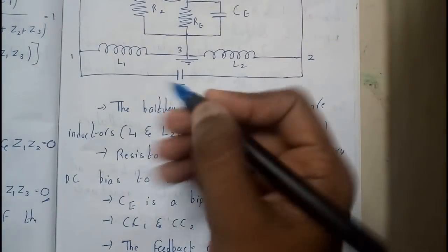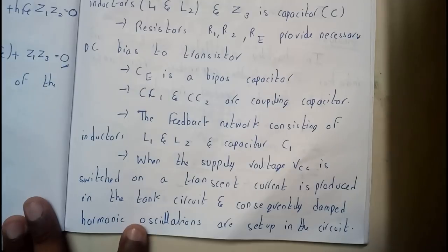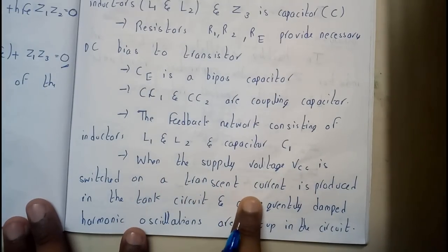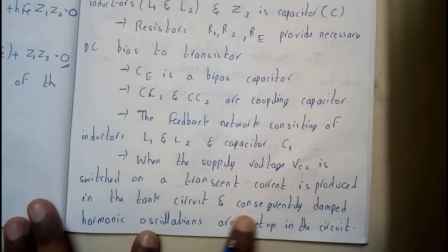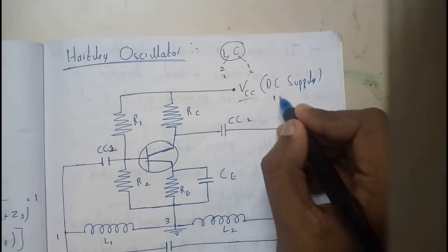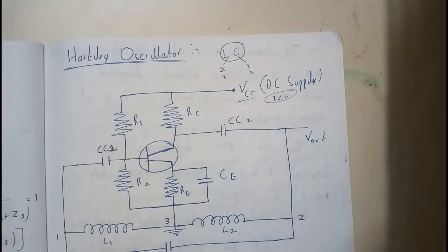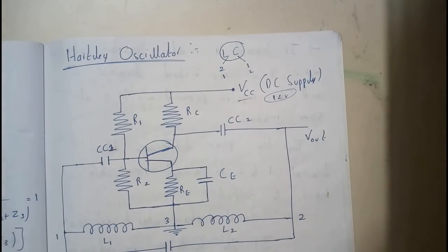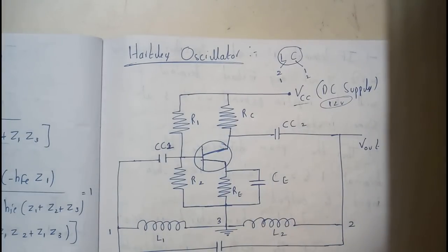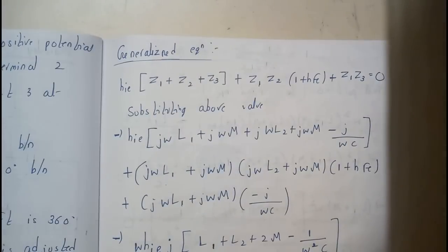The feedback network consists of inductors L1 and L2 and capacitor C. When the voltage supply VCC is switched on, a transient current is produced in the tank circuit, and consequently damped harmonic oscillations are set up. VCC is our supply — maybe 12 volts — and once given, it provides supply to the amplifier and harmonic oscillations are formed.